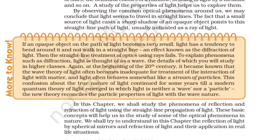At the beginning of the 20th century, it became known that the wave theory of light often becomes inadequate for treatment of the interaction of light with matter, and light often behaves somewhat like a stream of particles. This confusion about the true nature of light continued for some years till a modern quantum theory of light emerged, in which light is neither a wave nor a particle — the new theory reconciles the particle properties of light with the wave nature. In this chapter, we shall study the phenomena of reflection and refraction of light using the straight-line propagation of light, and their application in real-life situations.